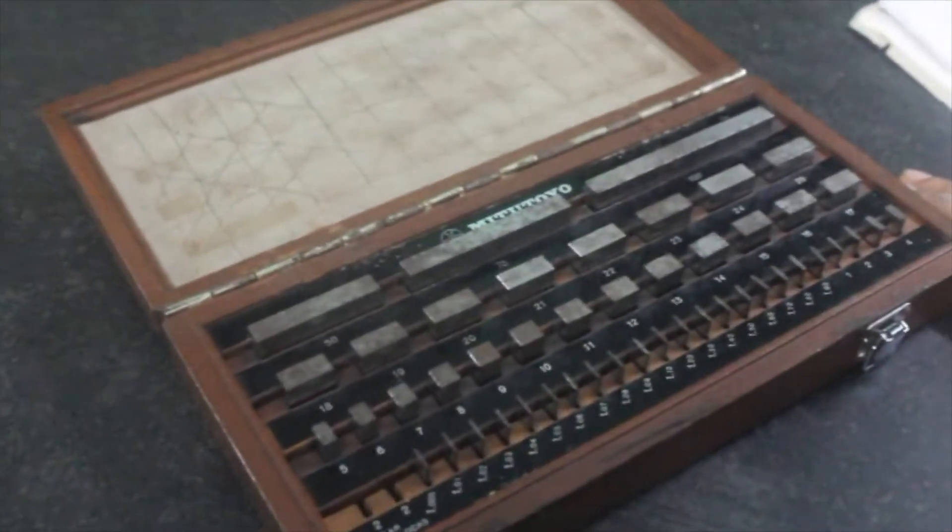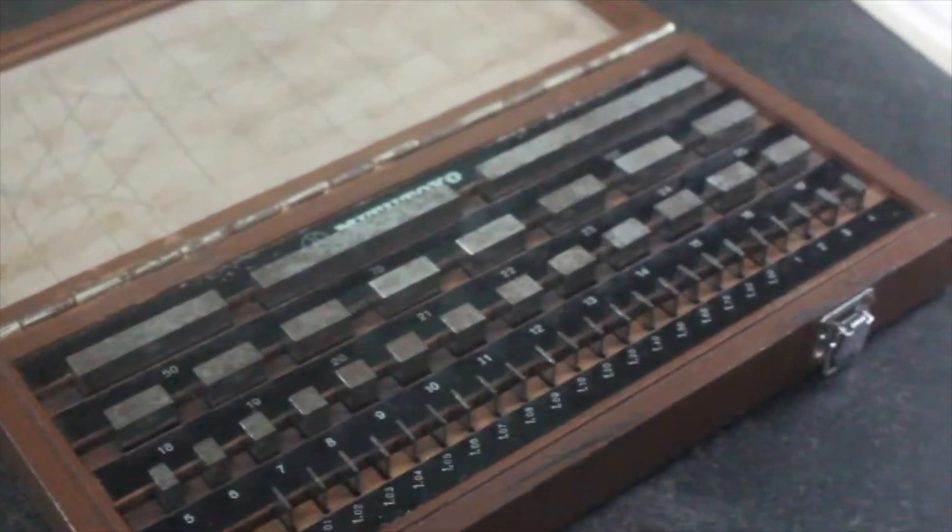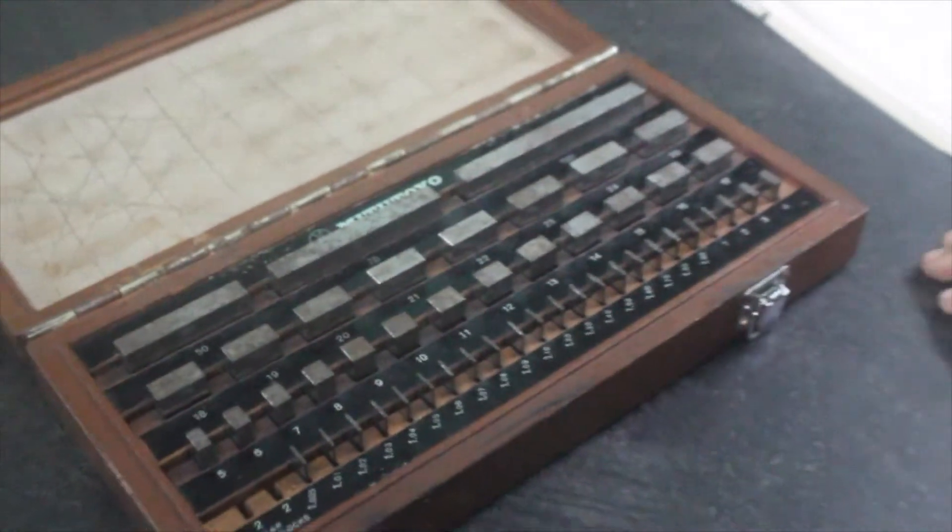This is a slip gauge set. While using slip gauges, we perform a process called wringing. Now we are going to look at how wringing is done.